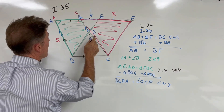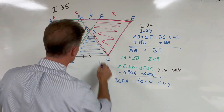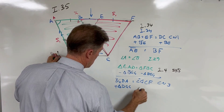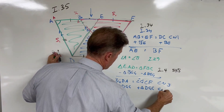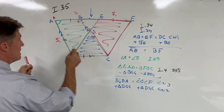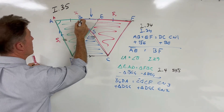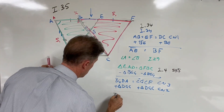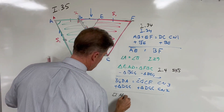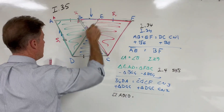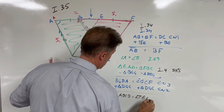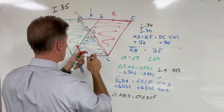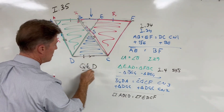Now all we have to do is add triangle DGC — the blue triangle — to both trapezoids. By Common Notion 2, we can add equals to equals and the sums are equal. Adding the blue triangle to the green trapezoid gives us parallelogram ABCD, and adding it to the other trapezoid gives us parallelogram EDCF. Therefore these two parallelograms are equal to one another — they're on the same base and in the same parallels — which is what we were supposed to prove. QED.